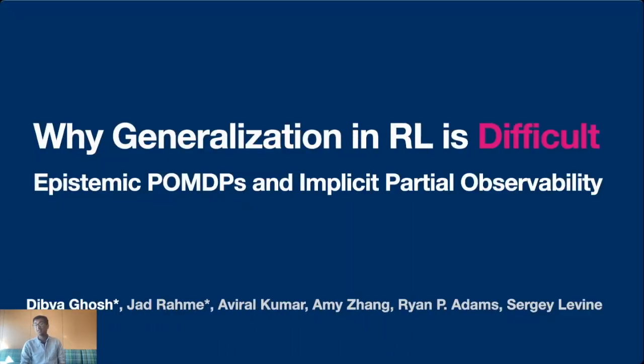Hi, my name is Debo Ghosh, and today I'll be presenting the NeurIPS paper titled Why Generalization in RL is Difficult, Epistemic POMDPs, and Implicit Partial Observability. This is joint work with collaborators at UC Berkeley and Princeton University.